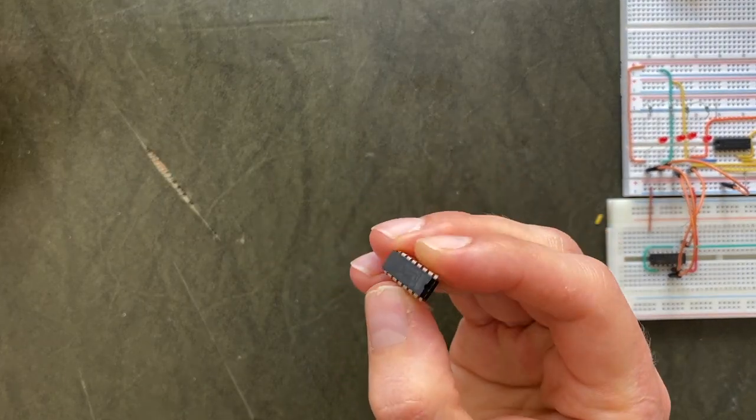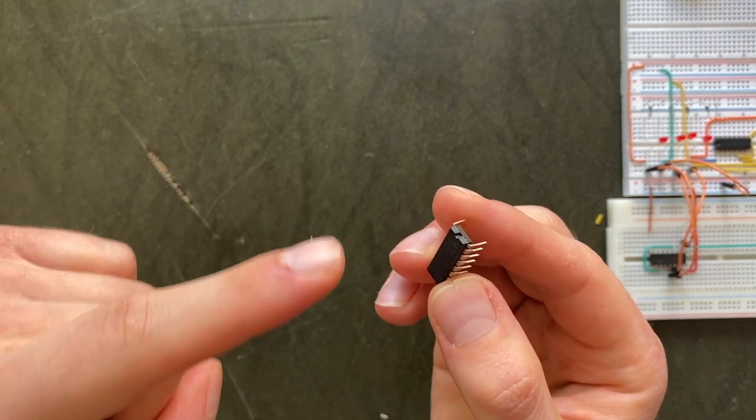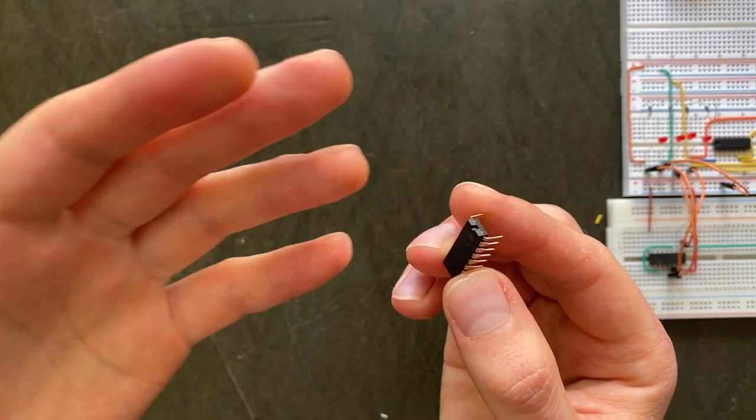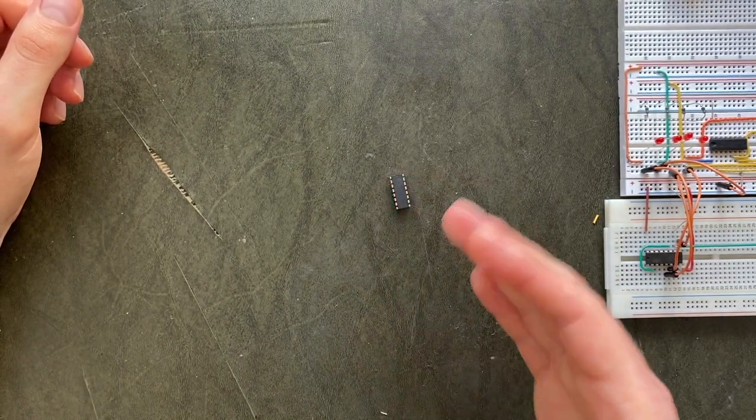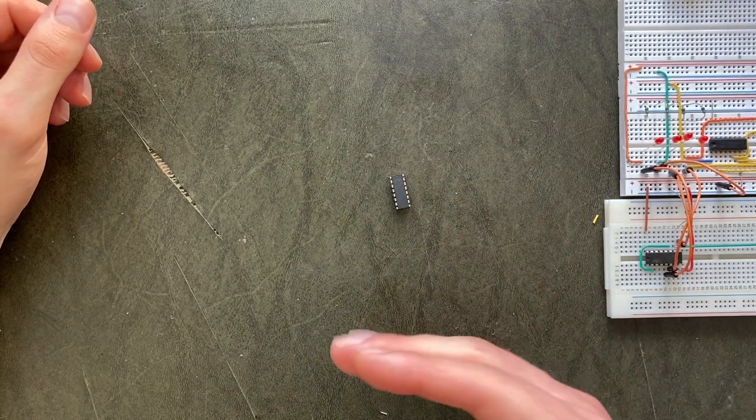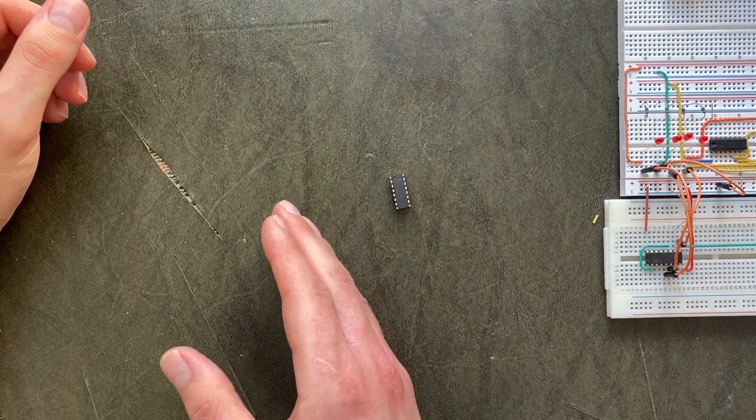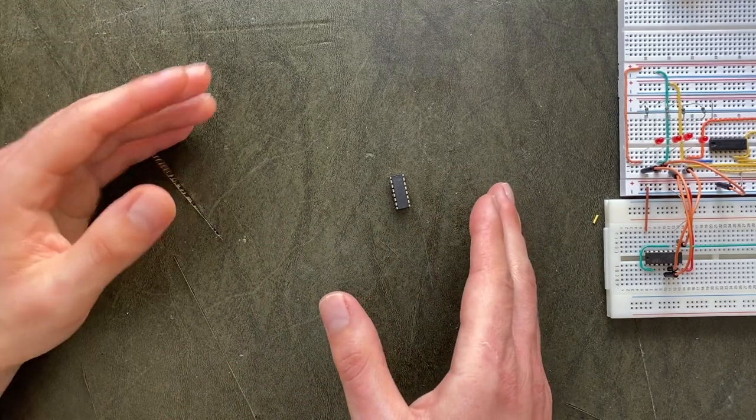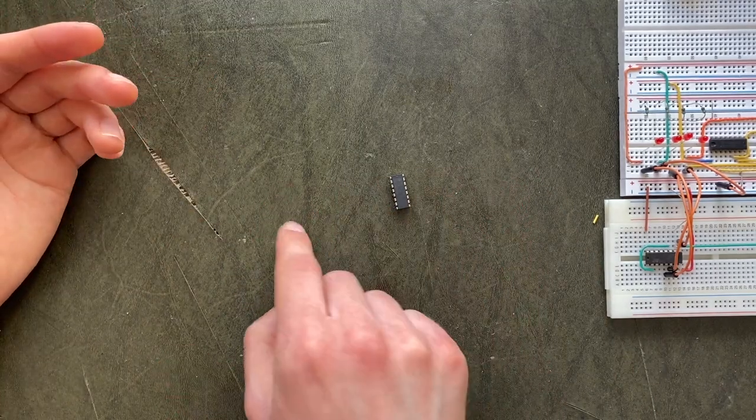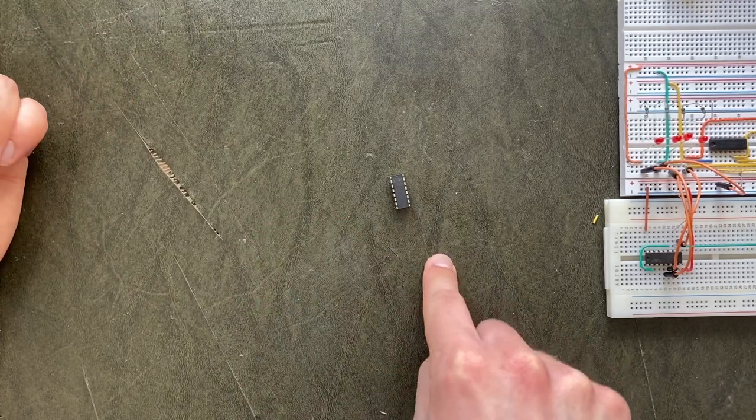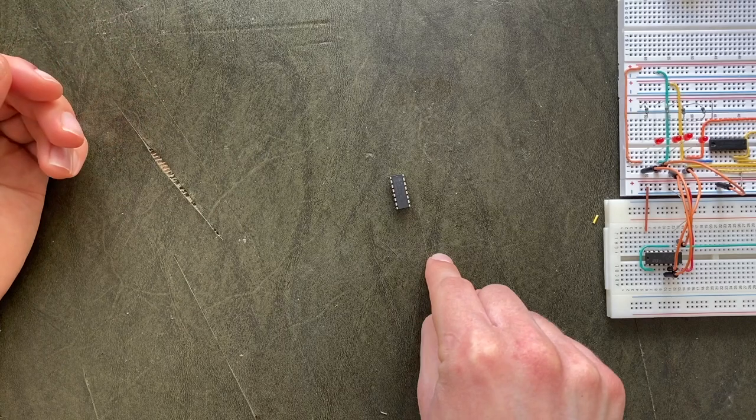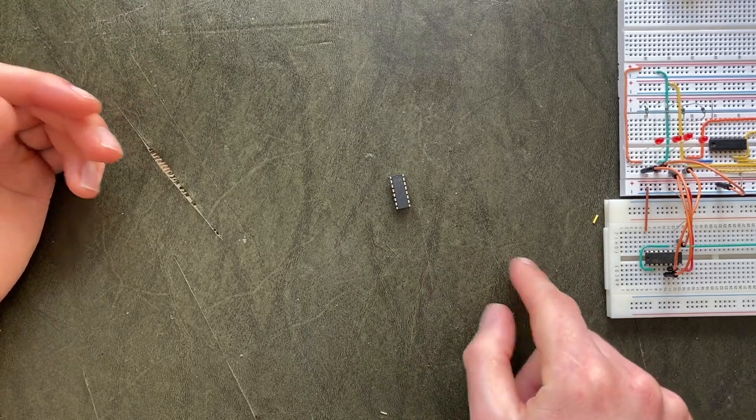Shift registers work like this. You give it a clock signal, and for every pulse, it will look at what's happening at its input pin. If there is a high enough voltage, it registers a 1, and if there isn't, it registers a 0. On the next clock pulse, it will then take the input bit and shift it over to its first output. Another pulse, and the bit shifts over to the next output, and so on.